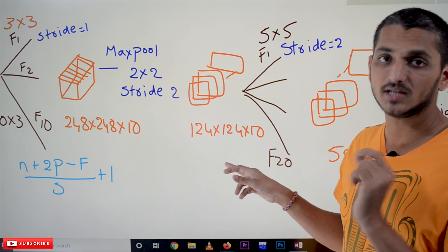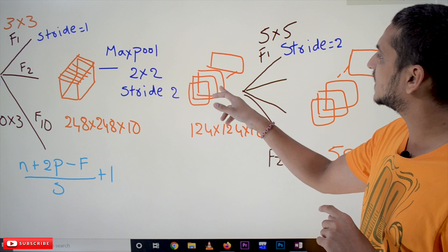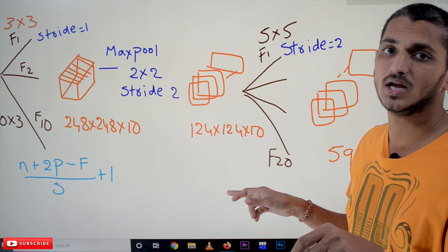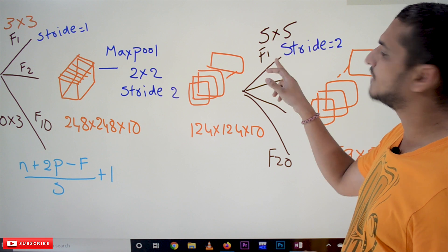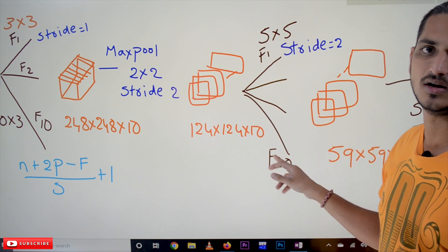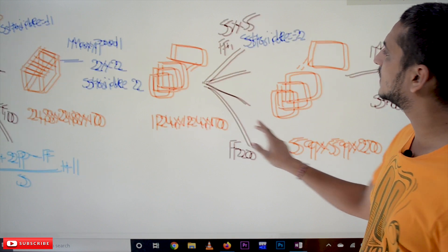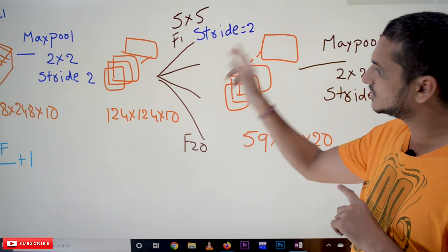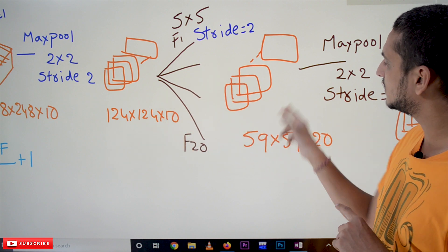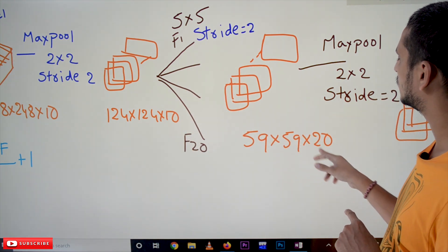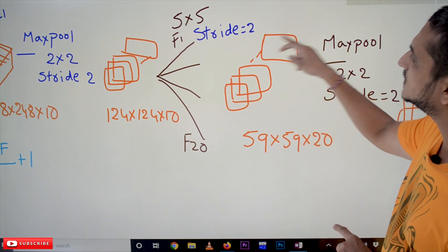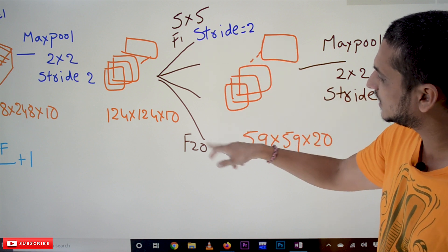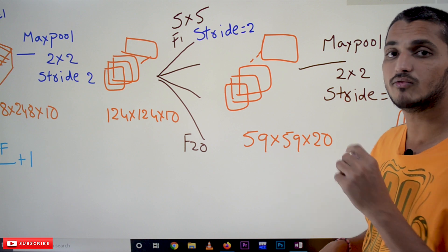This image is taken as input to the next convolution layer. In the next convolution layer we are using a 5 by 5 filter and 20 filters total. The stride is equal to 2. Passing these values into the equation, we get the output image size of 59 by 59 by 20 — where 20 means 20 channels, from F1 through F20.